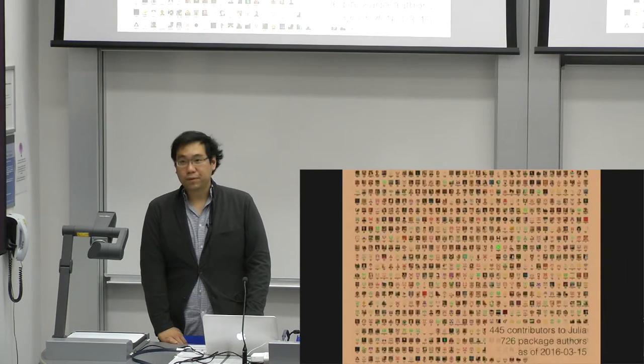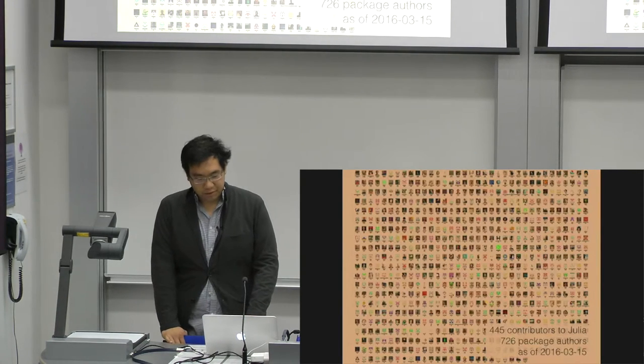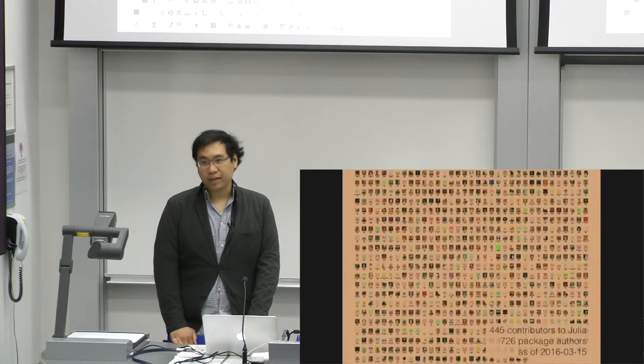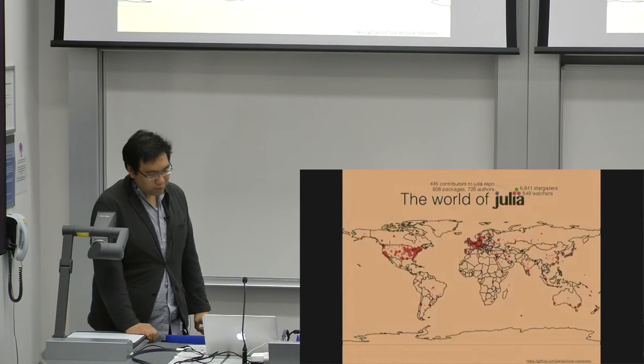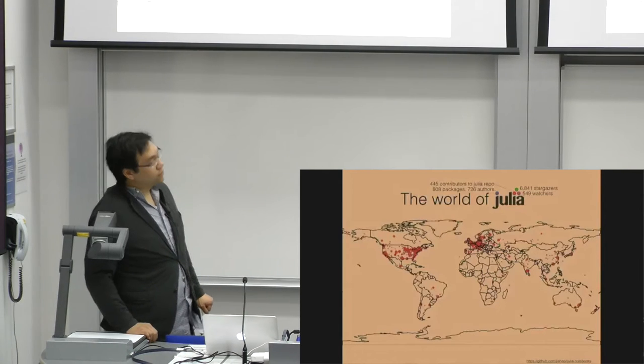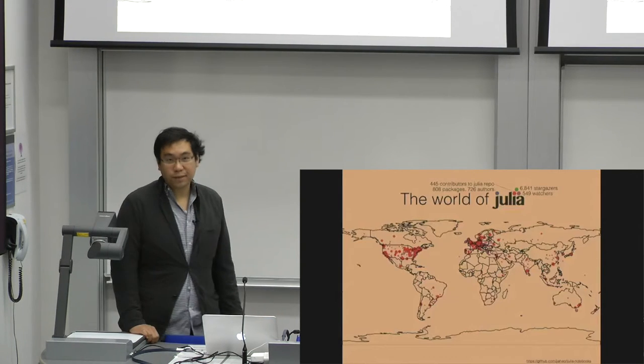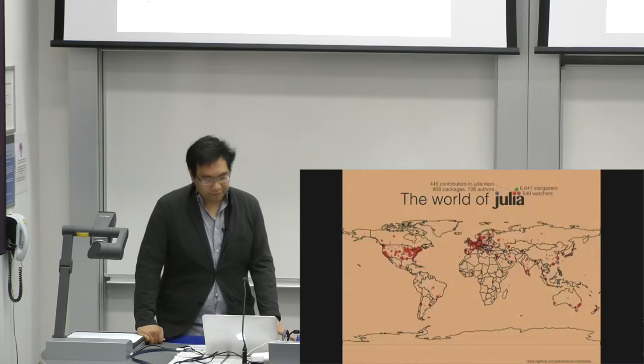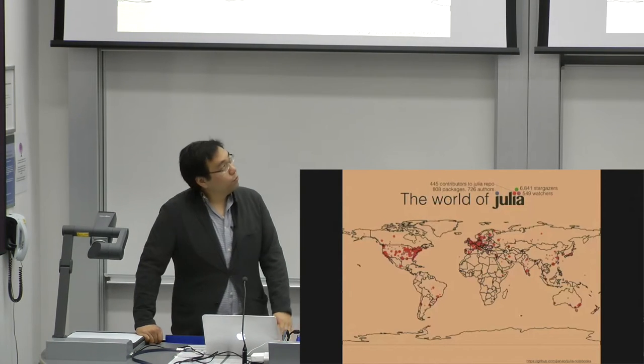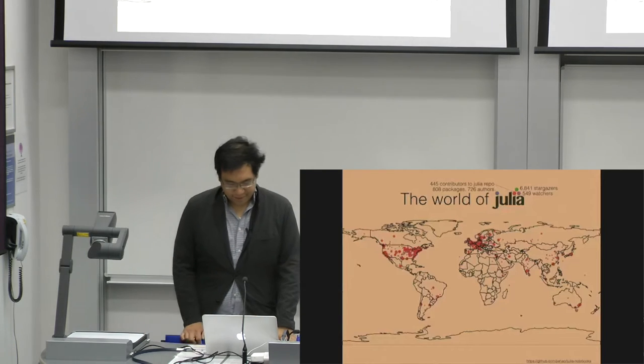If anyone has any doubts as to whether or not people use Julia, this is a somewhat out of date, half a year old list of the number of people who have made contributions to Julia. 445 people have contributed to Julia as of March 2016, and 726 people have written a package or committed or contributed to a package. And this is where they all are. This is a Julia script that downloads all this GitHub data of people who have been contributing to Julia and tries to figure out their geolocation based on their self-reported location in GitHub and then place them on a map roughly sized according to the number of commits they have.